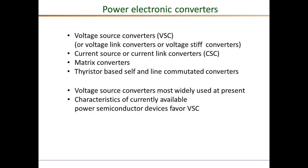The reason for that is the characteristics of currently available power semiconductor devices like MOSFETs and IGBTs. They have characteristics that are well suited for voltage source converter requirements. For example, current source converters need bipolar voltage blocking capabilities, which is hard to achieve in a single device. Therefore, voltage source converters are mostly used, and that is why the focus of this module is going to be completely on voltage source converters.